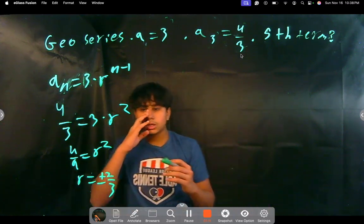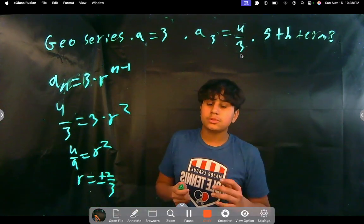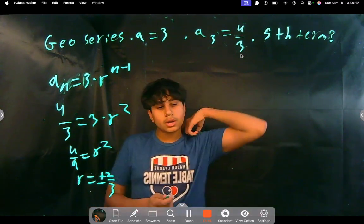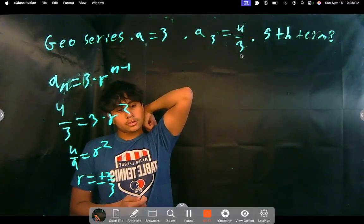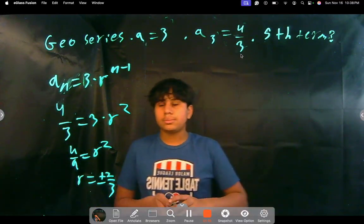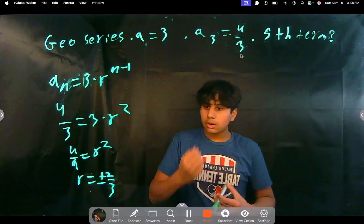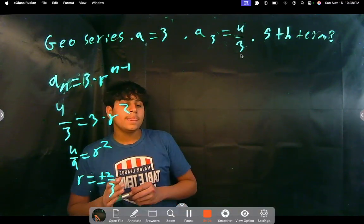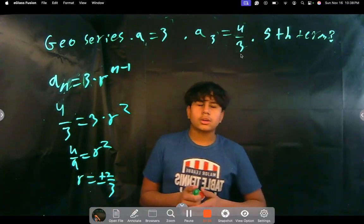Well, from what we're given, we can't really find out whether it's positive 2 thirds or negative 2 thirds because both will work and both will find a 4 thirds. Well, both will equate to 4 thirds when you put them into the equation. So really, there's no way to find that with the information we're currently given.